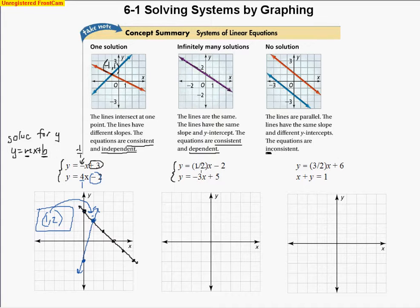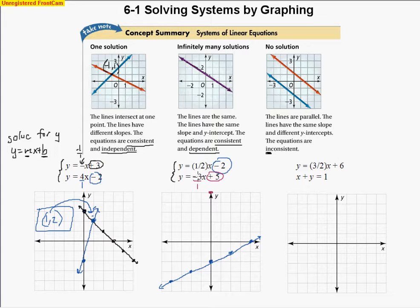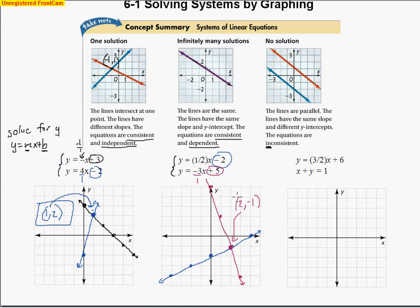For the next problem, both equations are in slope-intercept form. The first has a y-intercept of negative two, and a slope of one over two — up one, over two. The second has a y-intercept of positive five and a slope of negative three over one, so down three over one to the right. The lines cross at the point (2, -1), which is the solution of the system.